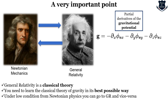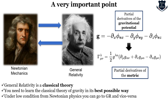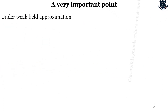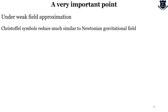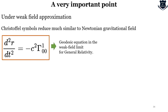First, General Relativity is obviously a classical theory, not a quantum theory. So you need to learn the classical theory of gravity in the best possible way. Under low-speed, weak-field conditions of Newtonian physics, we can go to General Relativity and vice versa. The partial derivative of the classical gravitational potential actually gets reduced to partial derivatives of the metric. There is the Levi-Civita connection involved. The gravitational potential — the classical gravitational potential — can be reduced to the metric tensor. This proves that from classical Newtonian mechanics, we can move into General Relativity and vice versa.